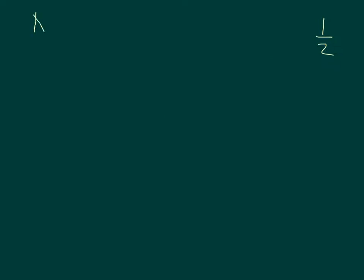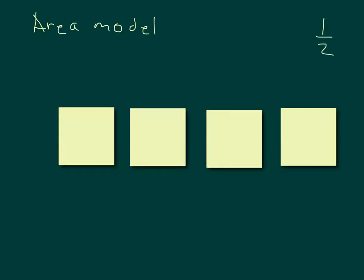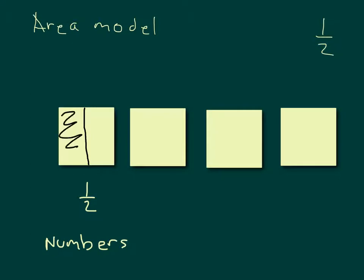Let's take a look at this using an area model. We're looking at the fraction 1 half. We'll also put the numbers below to show our work for how we're approaching each of these. Let's look at this first box here and divide it into two parts. According to our fraction — which is 1 half — we're looking at one of those two parts.